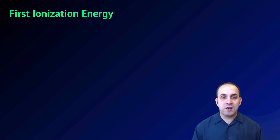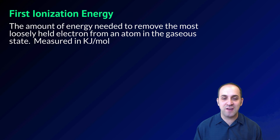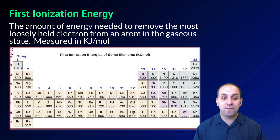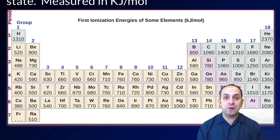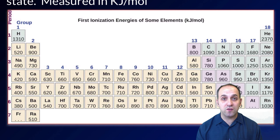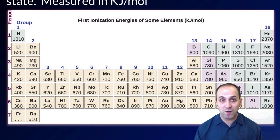Our last major trend is first ionization energy — defined as the amount of energy needed to remove the most loosely held electron from an atom in the gaseous state — measured in kilojoules per mole. Looking at the periodic table, within a period, as atomic number increases, first ionization energy also increases. In a group, as atomic number increases, first ionization energy decreases.